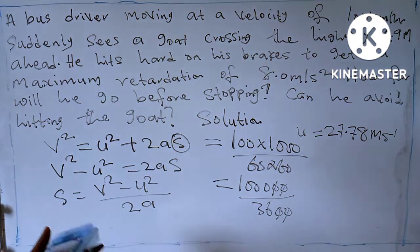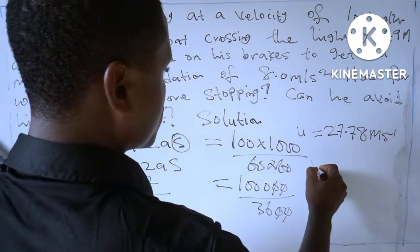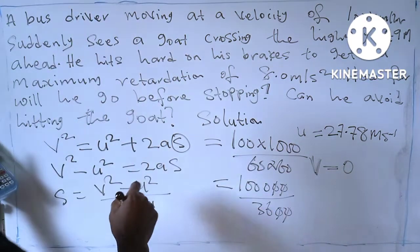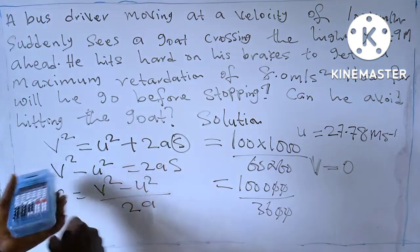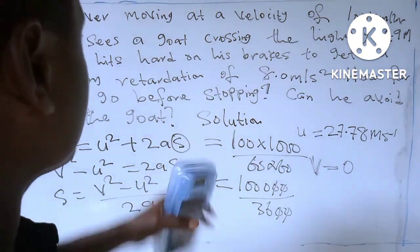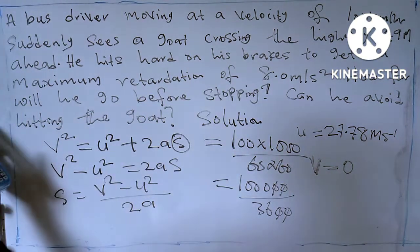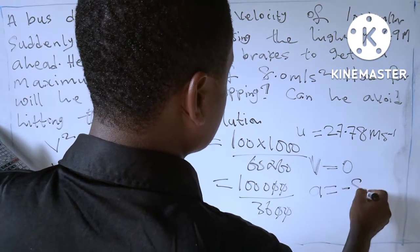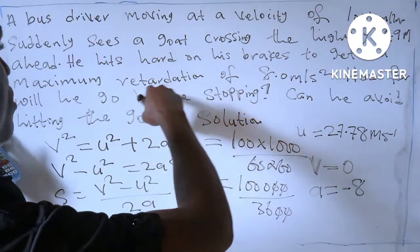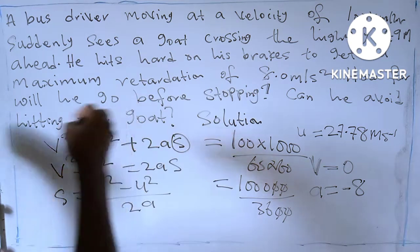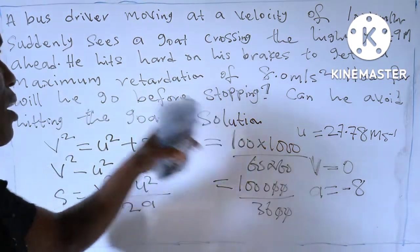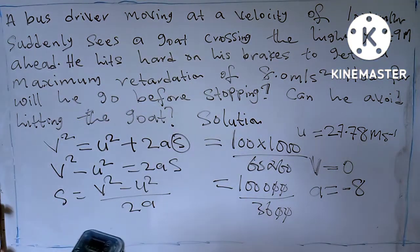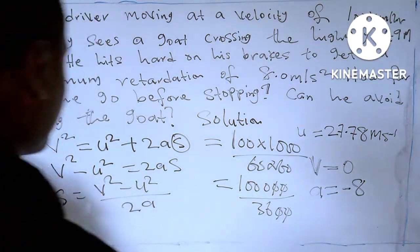The final velocity is not given, so v = 0, because the bus comes to a stop. The acceleration here is retardation — also called deceleration — so acceleration equals minus 8 meters per second squared. Retardation is the opposite of acceleration, so we use a negative value.